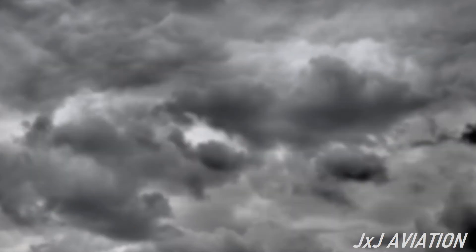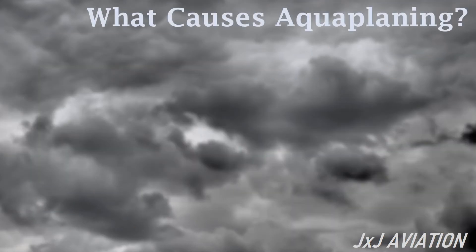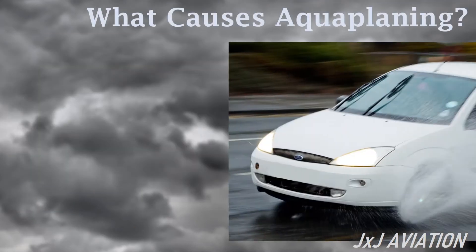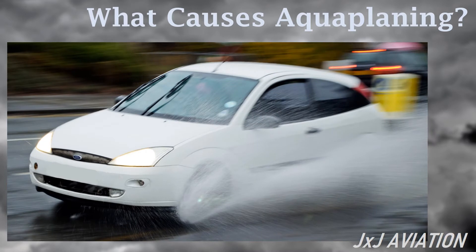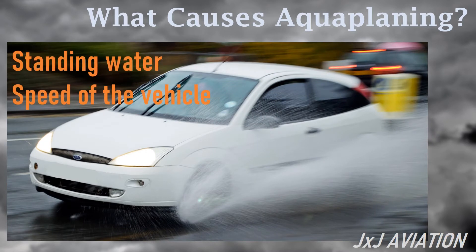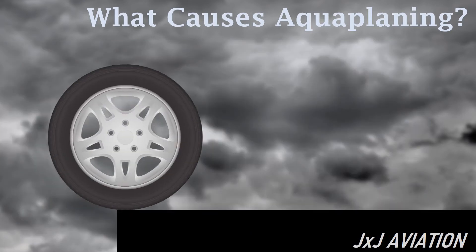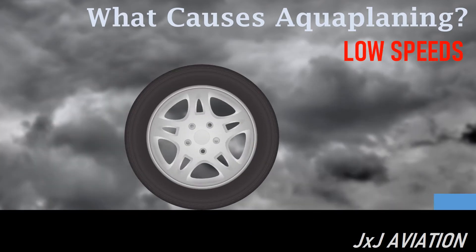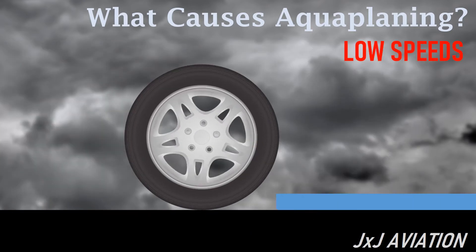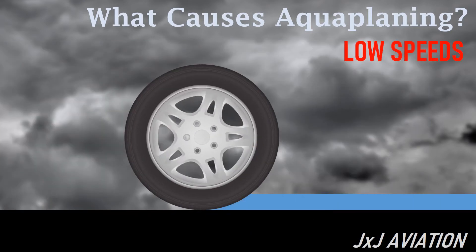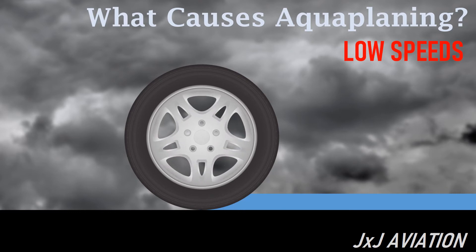What causes aquaplaning? Aquaplaning occurs when there is standing water on the surface. It also depends on the speed of the vehicle. When the vehicle is moving at low speeds, the tire will disperse the water and stay in contact with the surface.